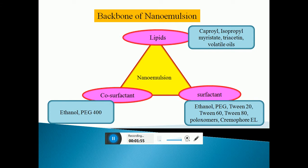In case of surfactant, ethanol polyethylene glycol 280-220 can be used. And in case of co-surfactant, we can use ethanol. In certain cases, we can use polyethylene glycol with low molecular weight.